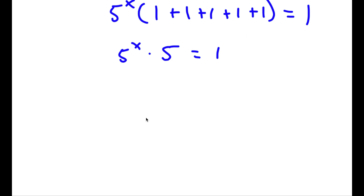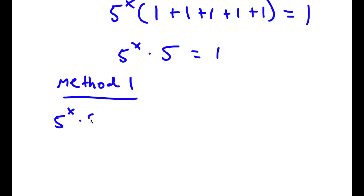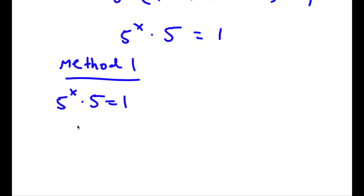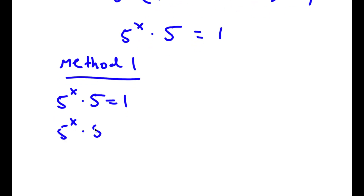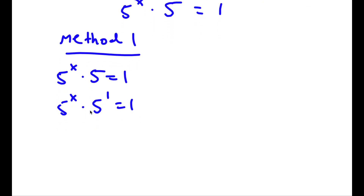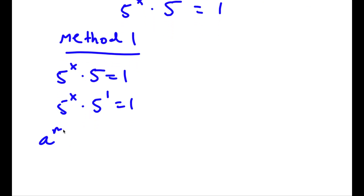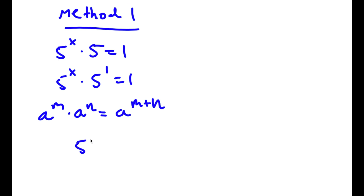From here, I have two methods to solving this equation. For method 1, I have 5 to the power of x times 5 is equal to 1. Now 5 is the same thing as 5 to the power of 1. And if I have something in the form a to the power of m times a to the power of n, this is equal to a to the power of m plus n. So 5 to the power of x times 5 to the power of 1 is going to equal 5 to the power of x plus 1, and this is equal to 1.